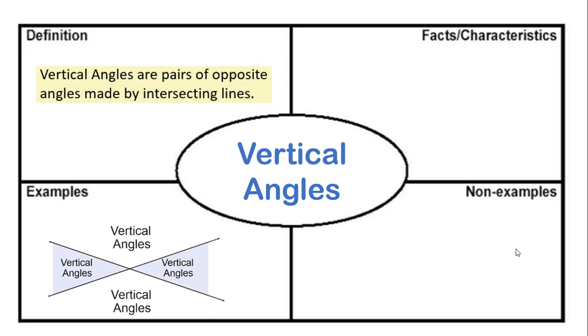You cannot have one vertical angle. You have to have two vertical angles. So it's a pair of angles. So these are some of the characteristics that we need to look for.